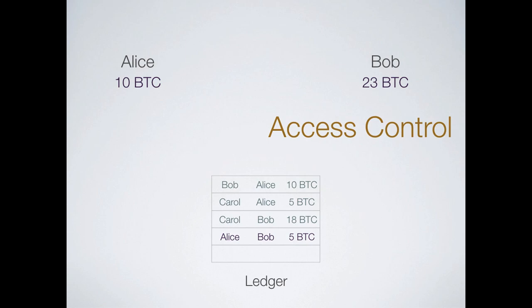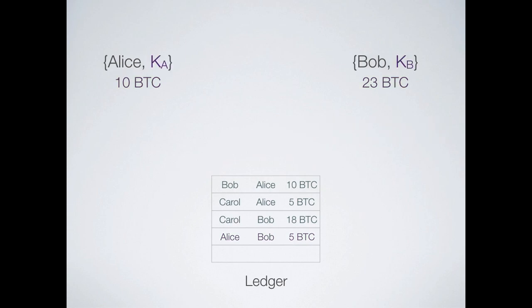This is a nice system with no double spending problem, but there are a couple of problems. The first: when Alice reports to the ledger 'move five Bitcoin from me to Bob,' the ledger has to know it's actually Alice making that request. We call this access control. Bob could go to the ledger and say 'hi, I'm Alice, can you move five Bitcoins to Bob's address,' even though it's Bob pretending to be Alice. So the ledger has to keep track of who's actually who so you can't steal other people's money.